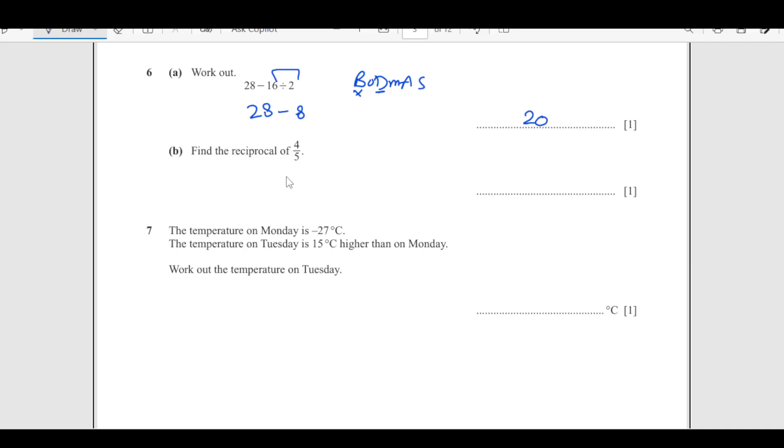Find the reciprocal. Reciprocal is like you just swap the numerator and the denominator. So this is going to be 5 over 4.